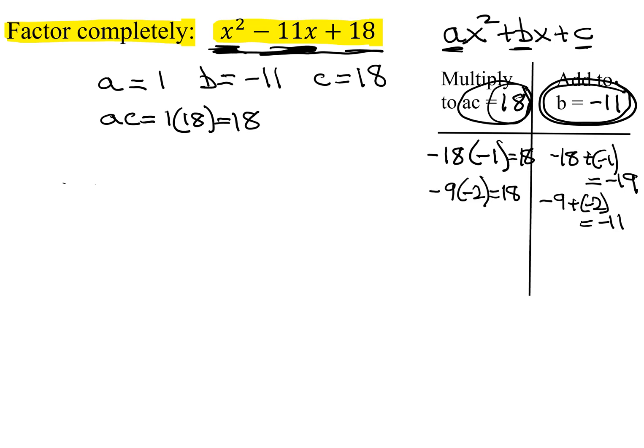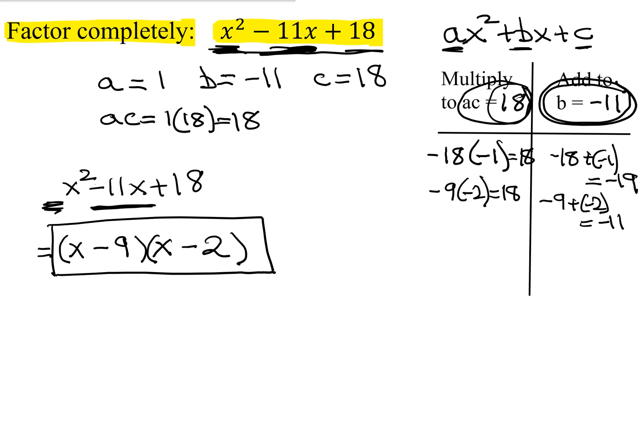So I found the numbers I need. So my original polynomial, if you notice, the coefficient of the x squared is a 1. So in this case, it's not necessary to rewrite my middle term as two terms and then factoring by grouping. I can immediately go to my factors. Since it multiplies to x squared, the first term is an x and an x. And then the numbers I need are the numbers I found, which is negative 9 and negative 2. So here are the two binomials that multiply to my required polynomial.